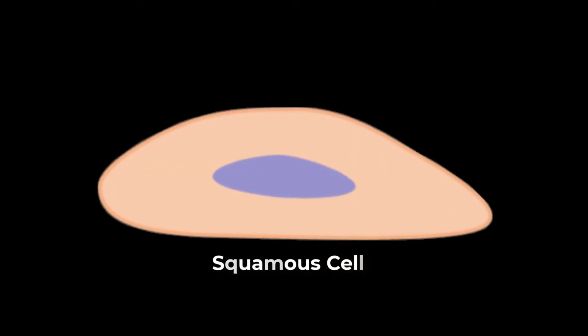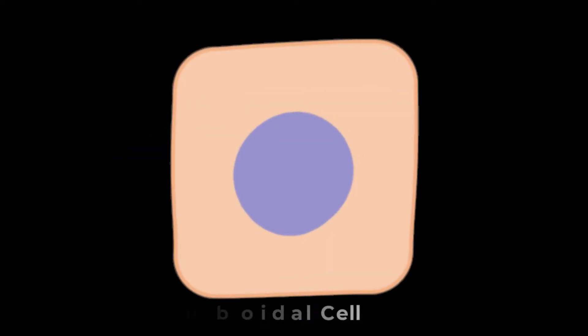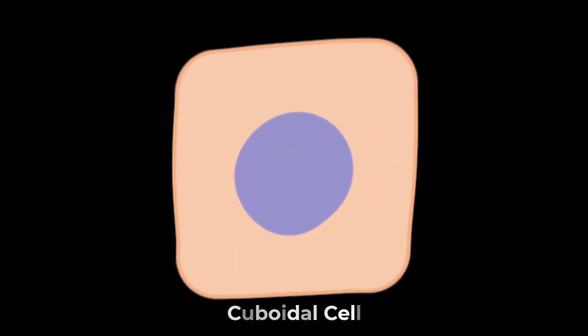Squamous cells are flattened and thin. Cuboidal cells are boxy, as wide as they are tall. Columnar cells are rectangular, taller than they are wide.